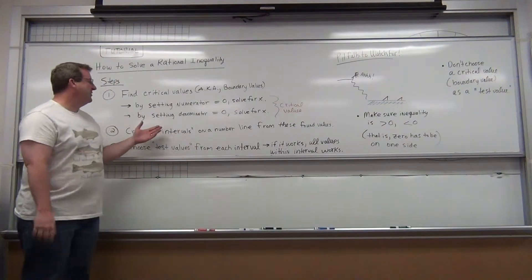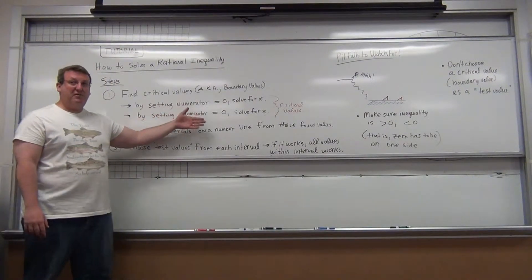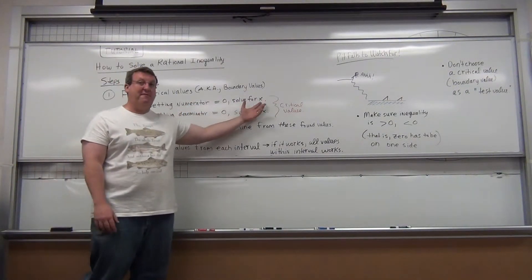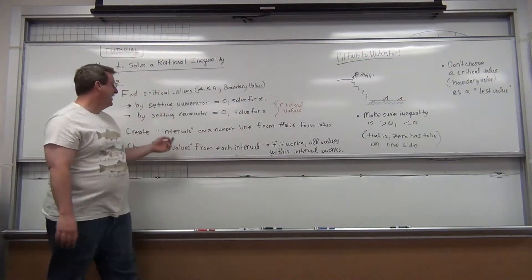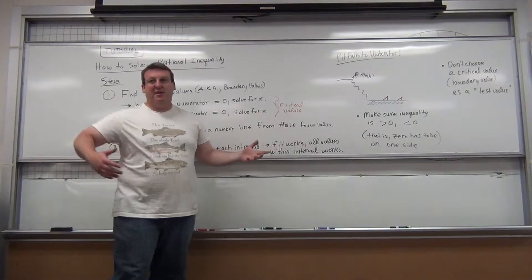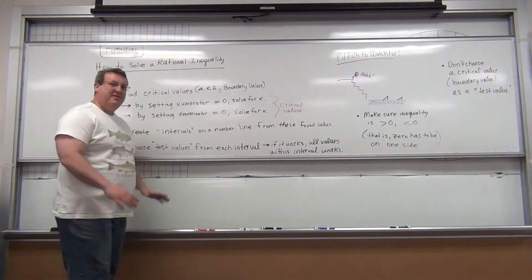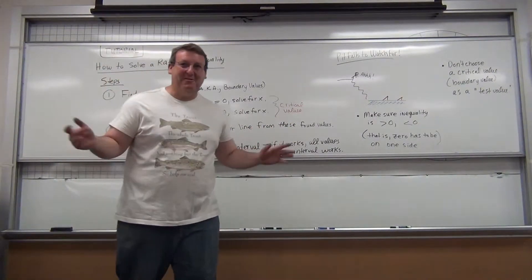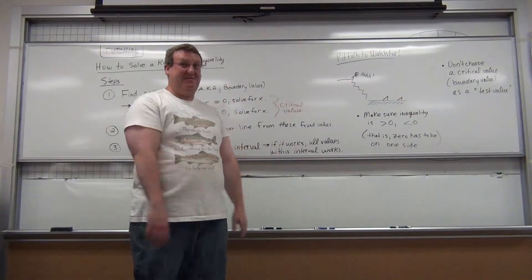So the first thing we do is we're going to set the numerator of the fraction equal to zero and solve for x. Then we're going to set the denominator equal to zero and solve for x. These will be the critical values. Don't try to ask why or understand why they're the critical values. That's just the definition. Those are the critical values.